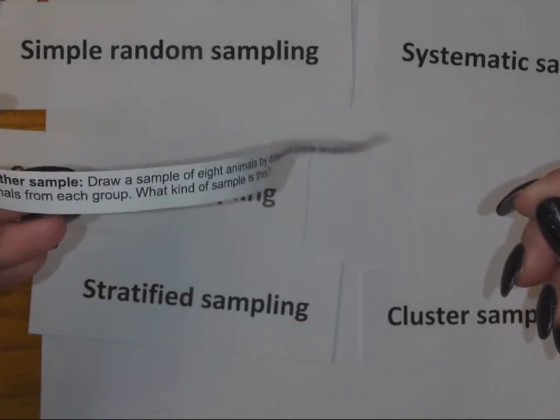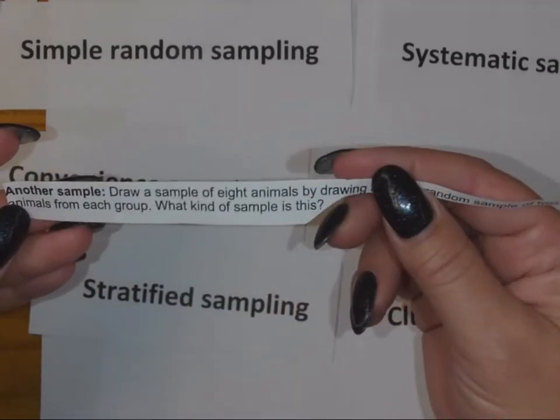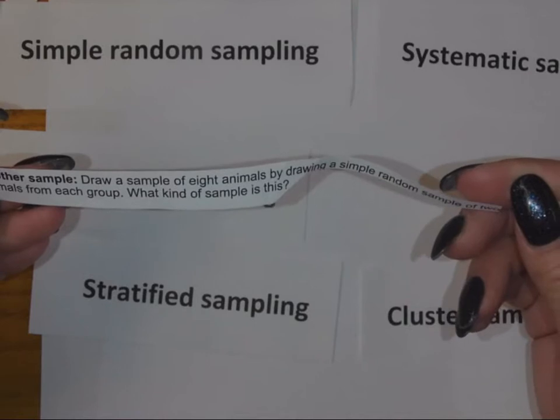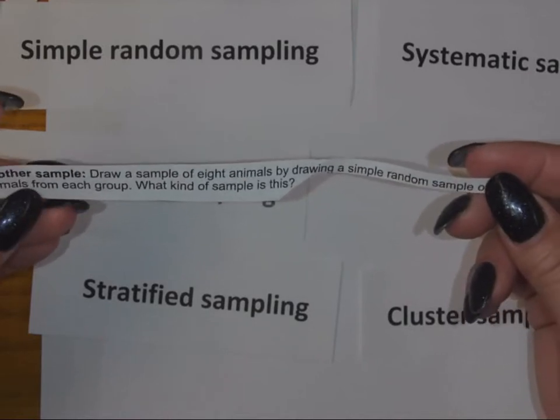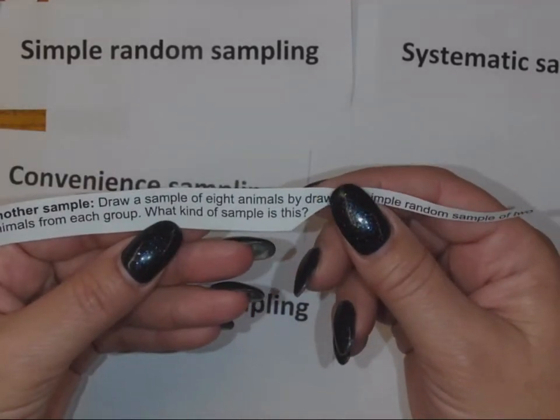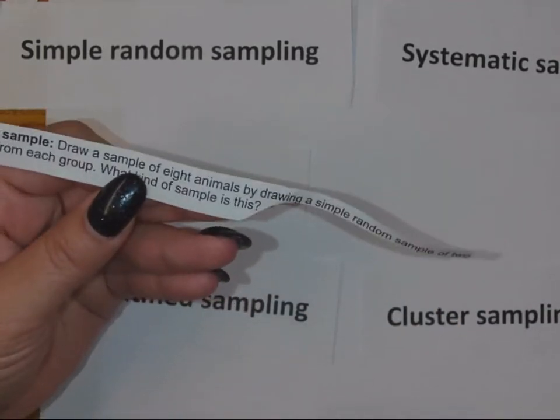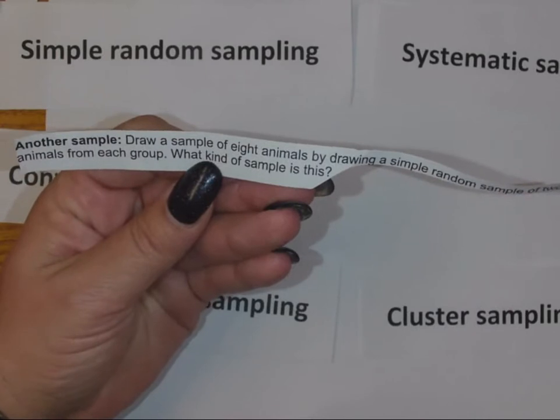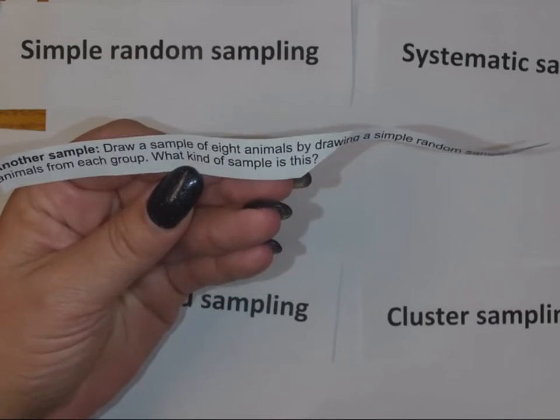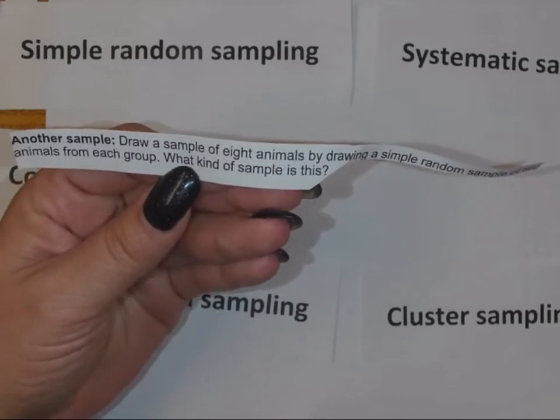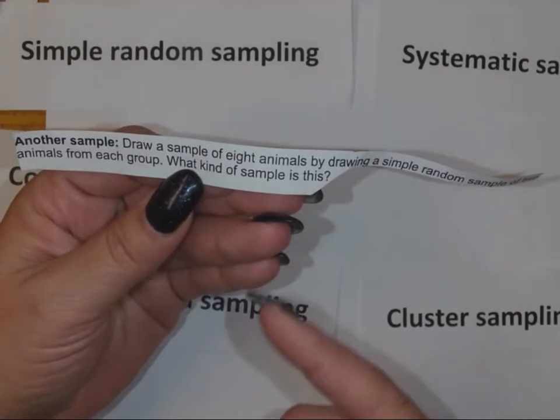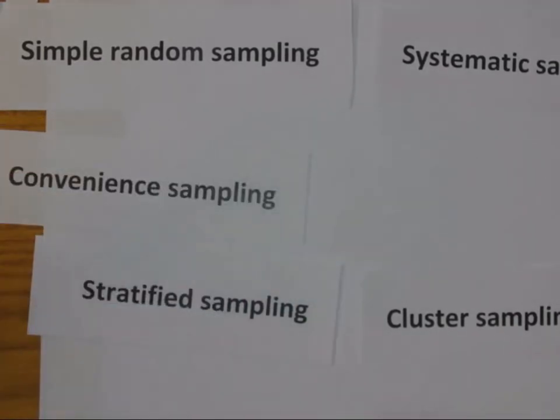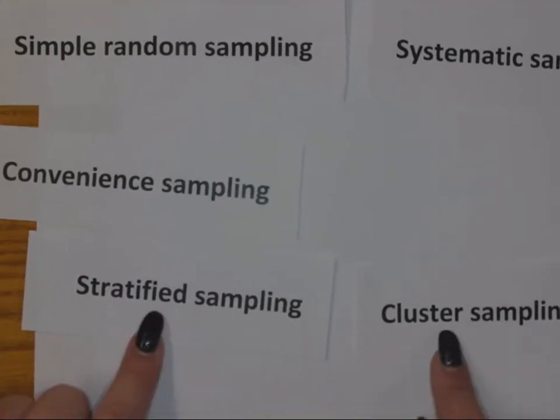Here's a sample: draw a sample of eight animals by drawing a simple random sample of two animals from each group. What kind of sample is this? We've apparently got different kinds of animals, maybe we're in a zoo or something like that, and we're drawing two animals from each group and we want eight total. There must be four groups.